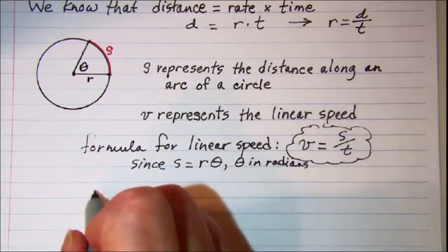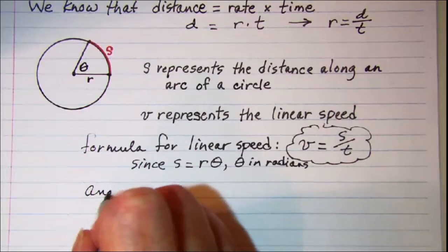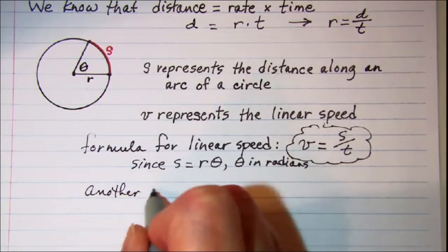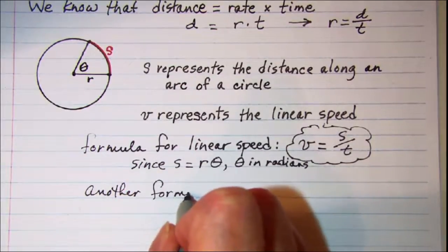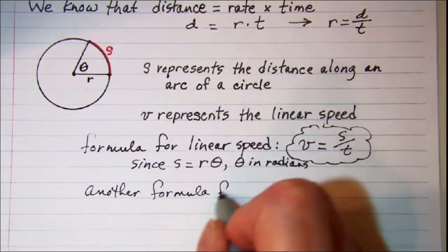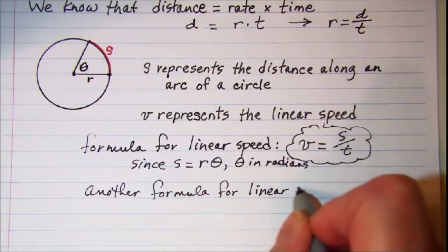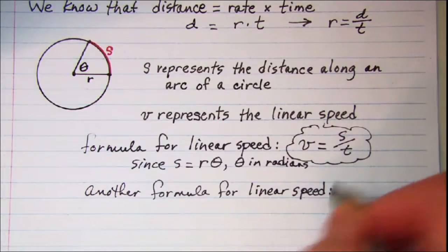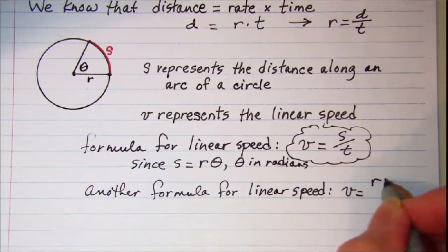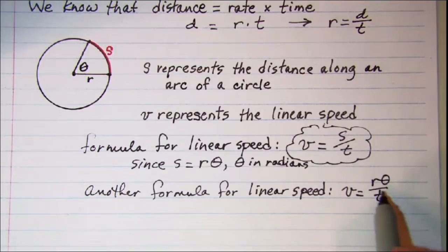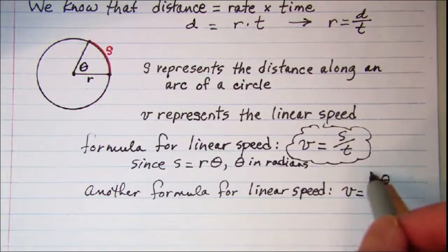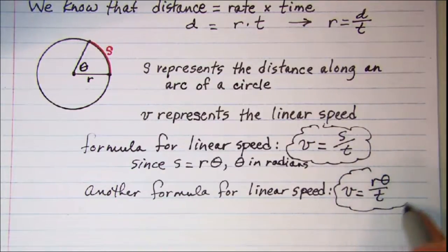Another formula for linear speed will be v equals r theta divided by t, and remember for this one theta needs to be in radians.